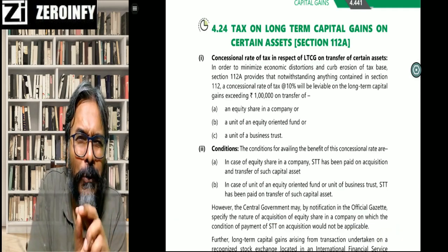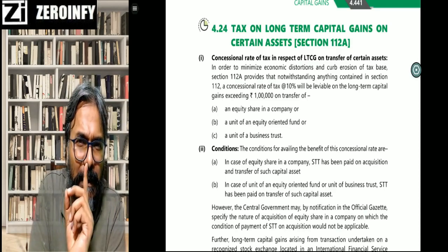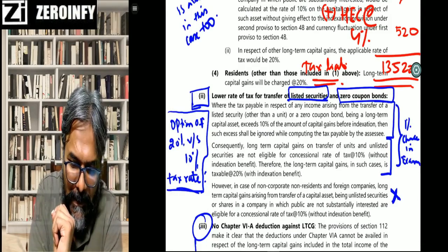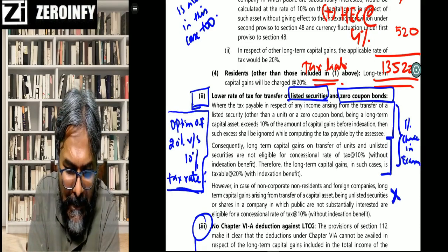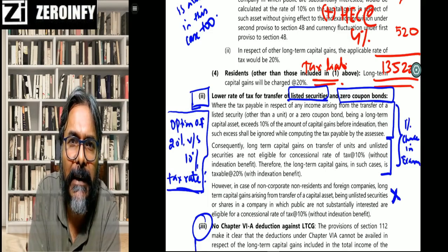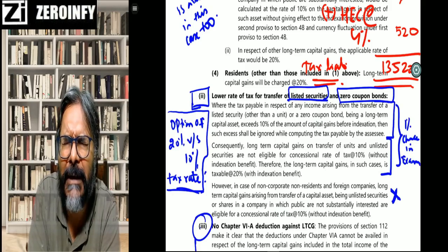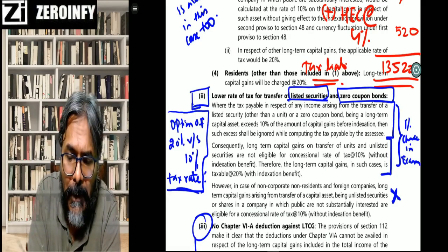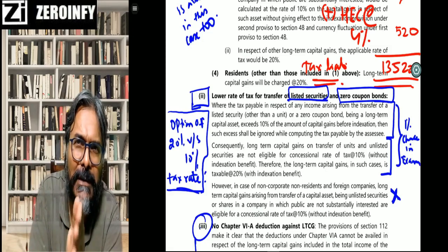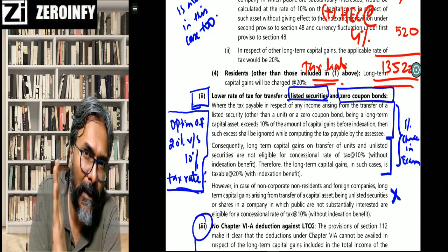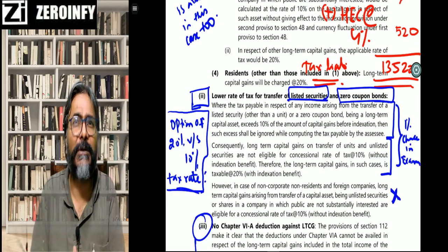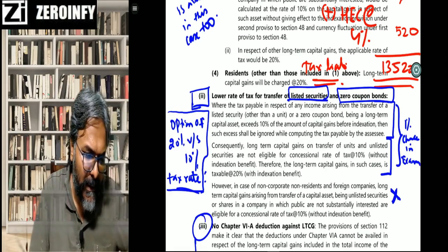In the last lecture on section 112, I told you about the rarest of rare case regarding listed security and zero coupon bond — there is an option: either go with indexation and charge 20% tax on long term capital gains, or don't go for indexation and charge 10% tax rate. That is what we discussed. The probability is very less, but keep it in mind as it is there in your module. Now somebody will ask what is the difference between this listed security and zero coupon bond versus 112A.